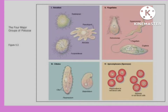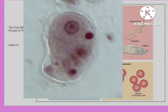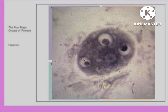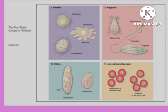Examples of Amoeba: Entamoeba histolytica, Entamoeba gingivalis. Examples of flagellates: Giardia lamblia, Trichomonas vaginalis, Leishmania. Examples of sporozoa: Plasmodium vivax, Plasmodium falciparum, Toxoplasma gondii. Examples of ciliates: Balantidium coli.